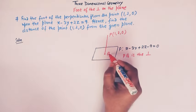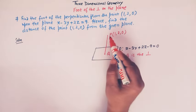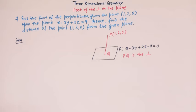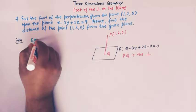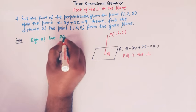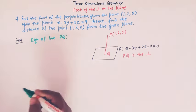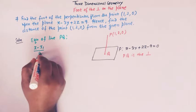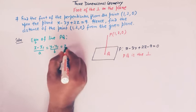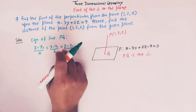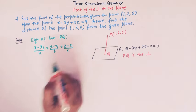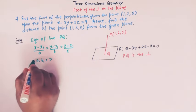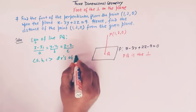We have to find the coordinates of this point Q. The coordinates of the point P are given as (1, 2, 0). So viewers, here we have to first write the equation of the line PQ. We know that the equation of a line in three-dimensional geometry passing through a point (x₁, y₁, z₁) is given by the standard symmetric form, where A, B, C are the direction ratios of the line PQ.